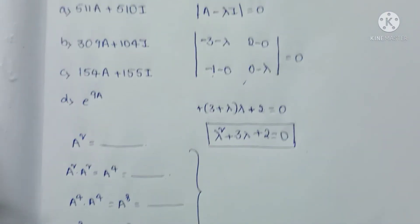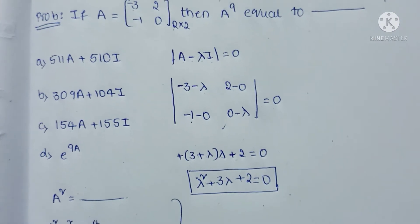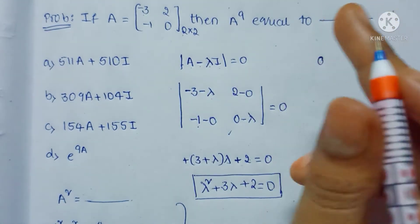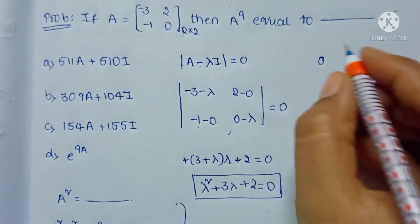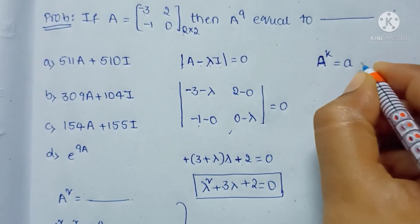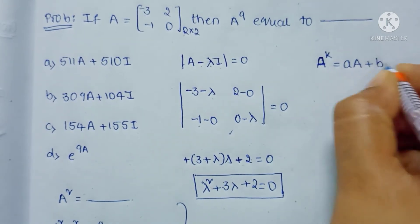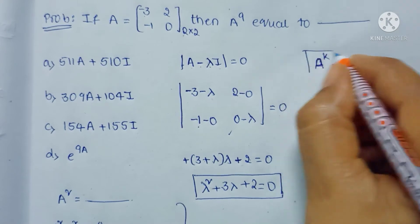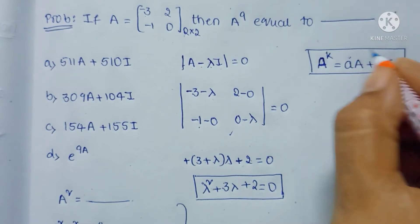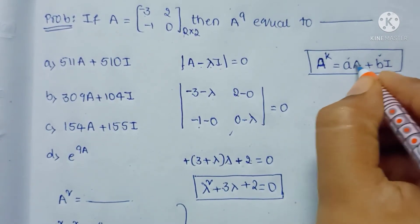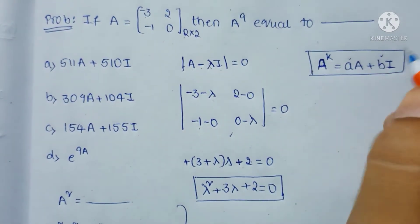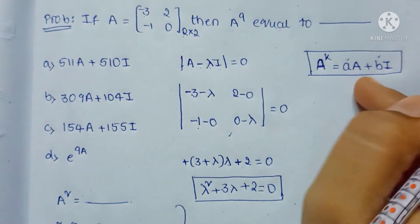The shortcut method: for any power k, the matrix A power k equals small a times A plus small b times I, where a and b are constants, A is the given matrix, and I is the identity matrix. To find this matrix we need to solve two equations using the eigenvalues.